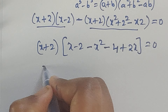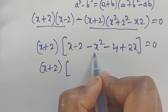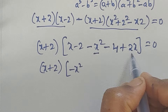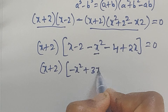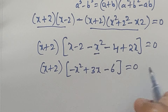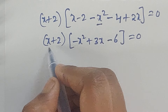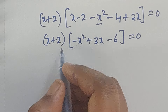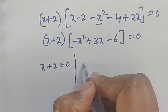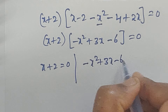So now: (x plus 2) times (minus x squared plus 3x minus 2 minus 4), which is equal to minus 6, equals 0. So now we split these factors as two parts: one is (x plus 2) equals 0, and the other is minus x squared plus 3x minus 6 equals 0.